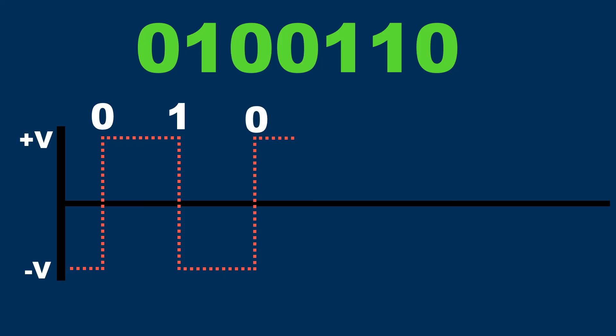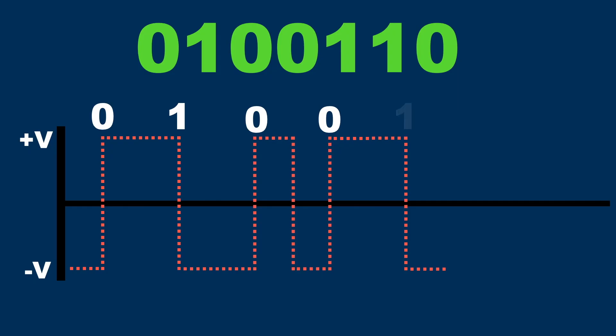The next bit is also a zero, so now the voltage drops to the negative voltage level for the start of the bit and stays there for half the bit time, and then changes to the positive voltage level. The next bit is a zero, so the voltage stays at the positive voltage level for half the bit time and then changes to the negative voltage level.